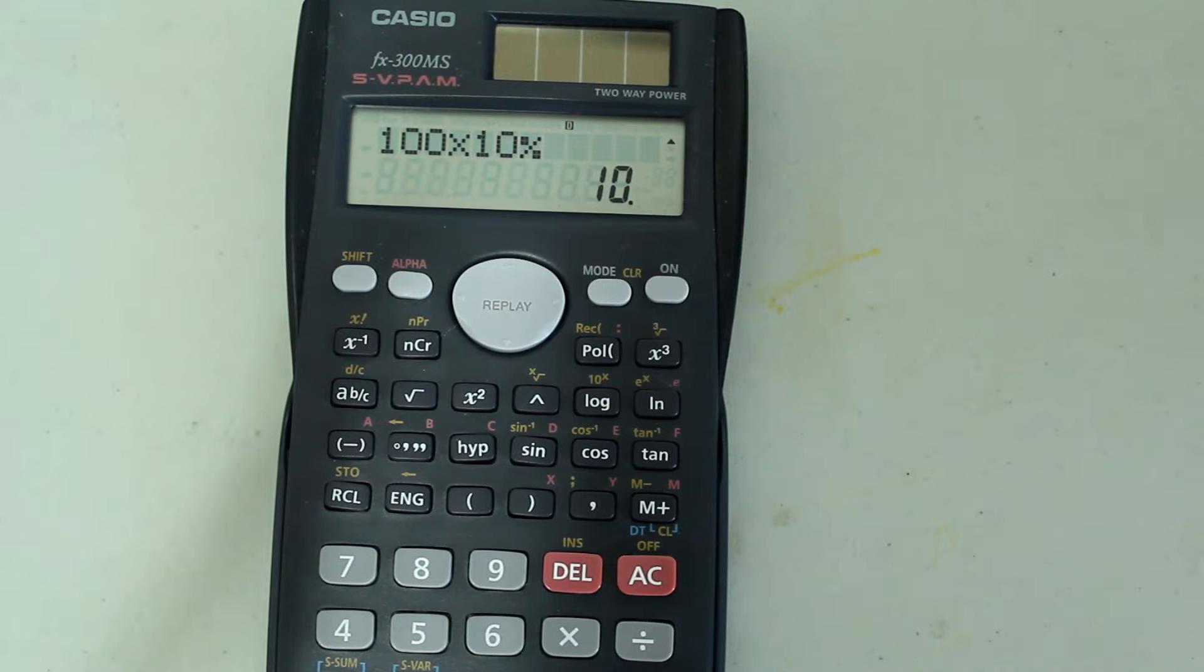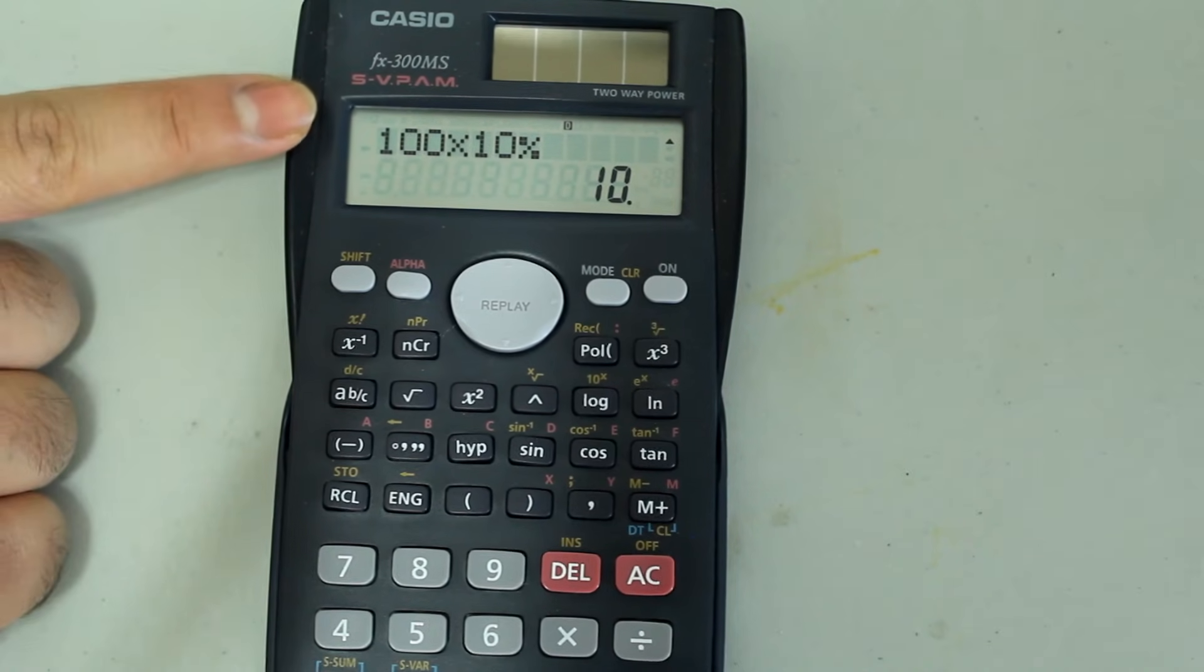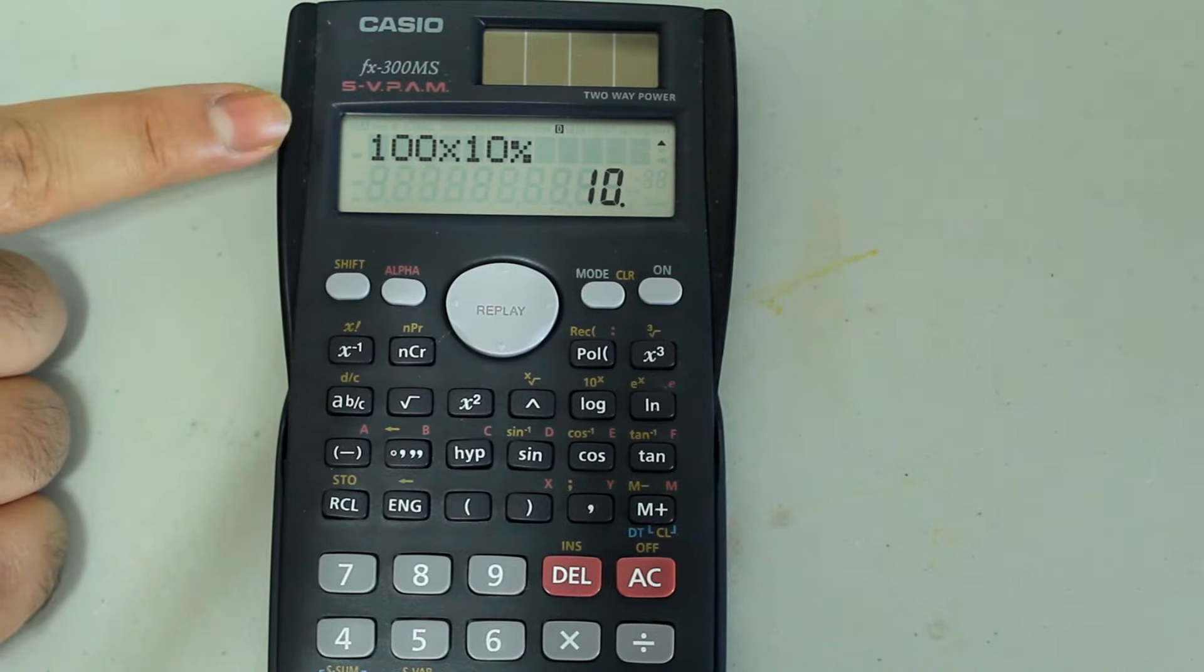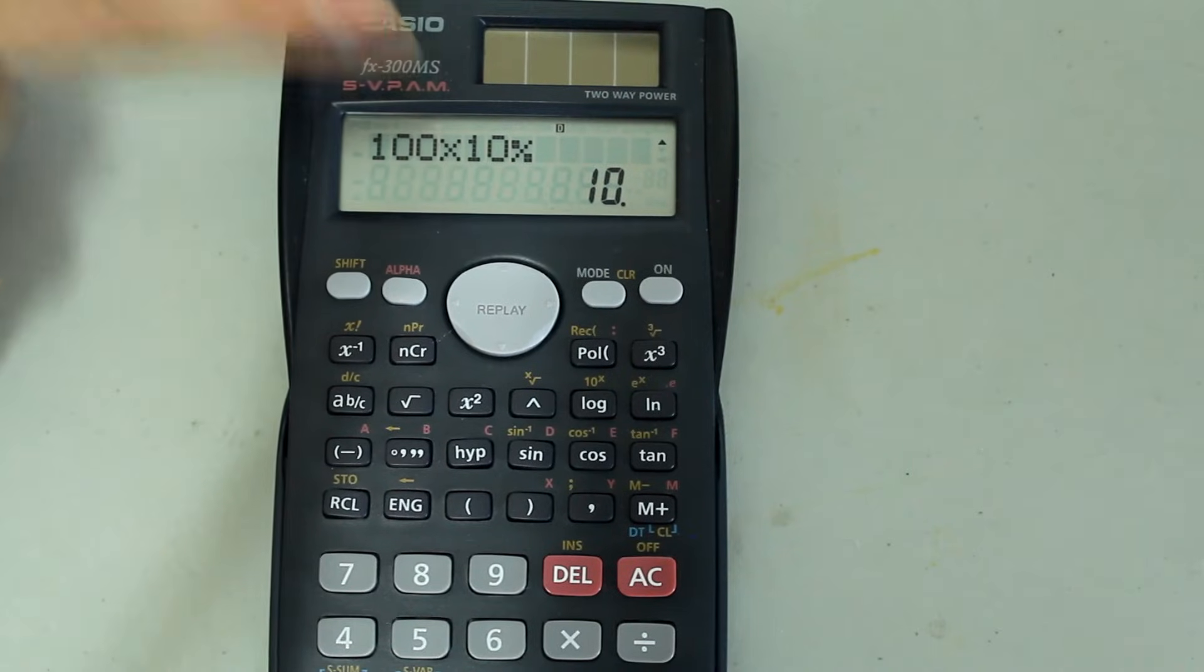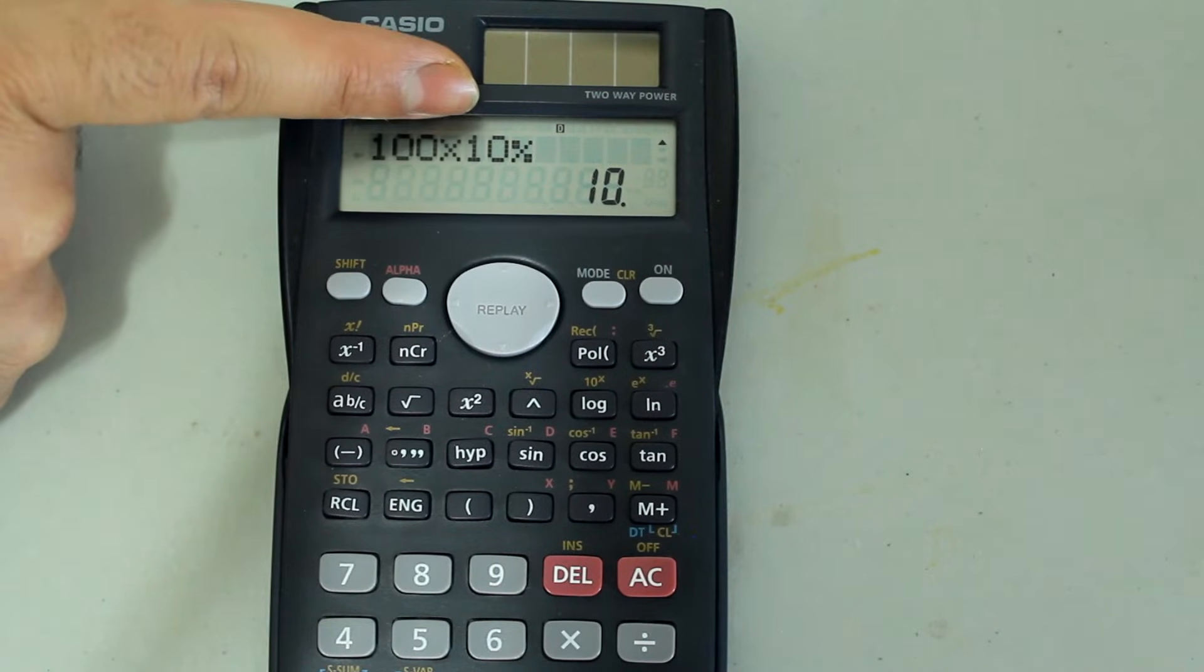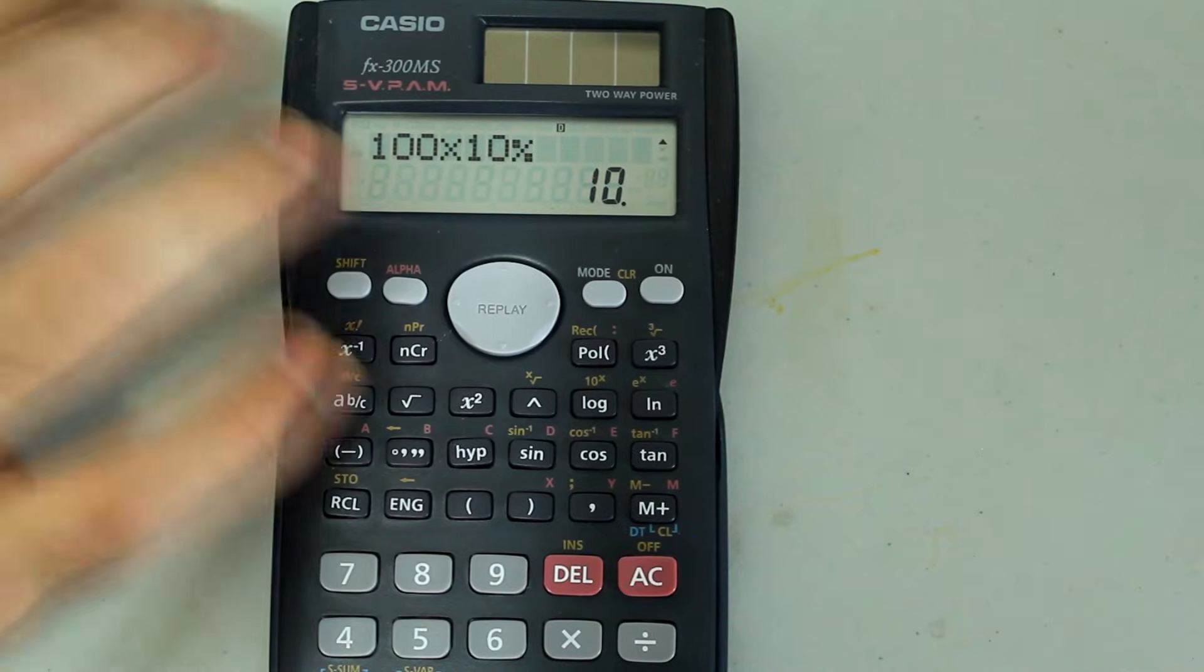Just to recap, first you need to type in the number for which you're trying to find the percentage of, and then you multiply that by the percent you're looking for. And that gives you the answer.